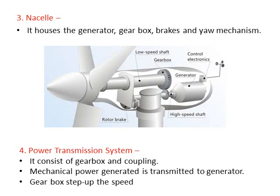Next is nacelle. Nacelle is a box which houses the generator, gearbox, brakes, and yaw mechanism. This box behind the turbine wheel is the nacelle, in which brakes, gearbox, and generator are housed.